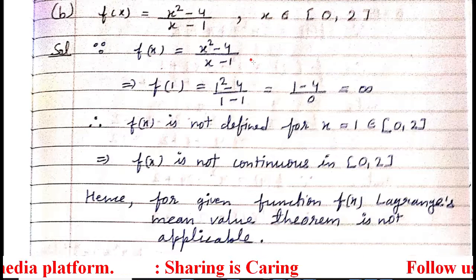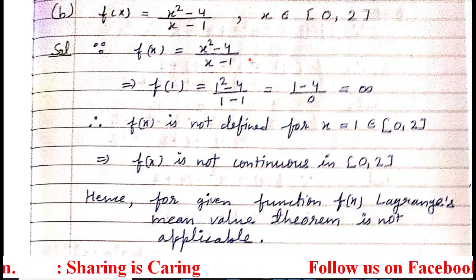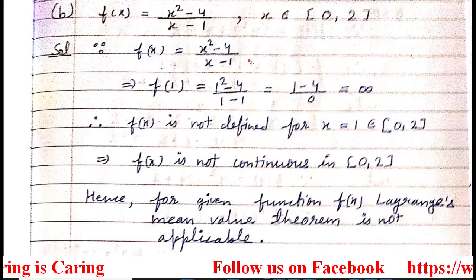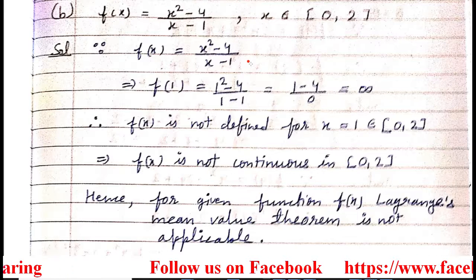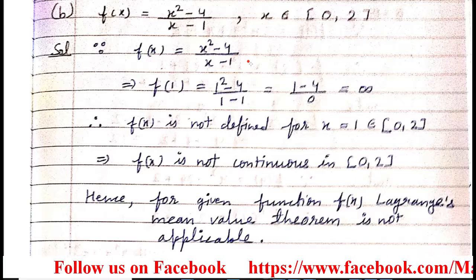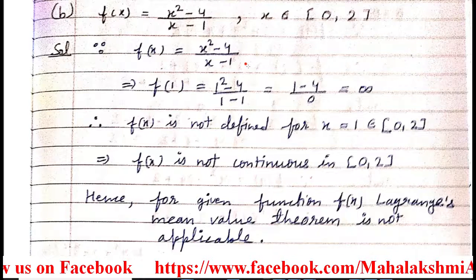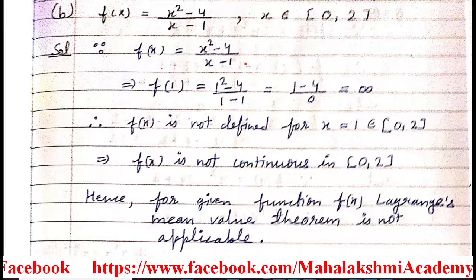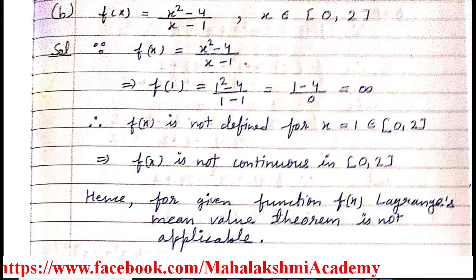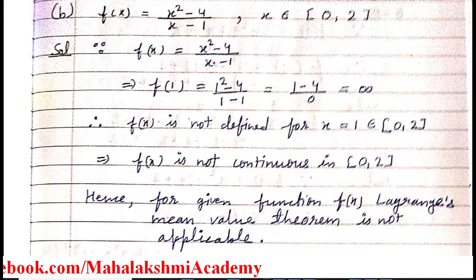In my previous video, I already explained what are the conditions for Lagrange's mean value theorem. There are two conditions. First condition is the function should be continuous and well defined in the closed interval. Second condition is the function should be differentiable in the open interval. We will start from the first condition — continuous and well defined in the closed interval.